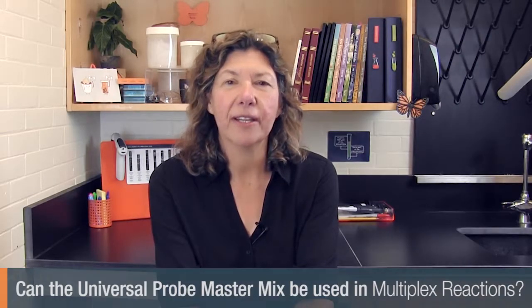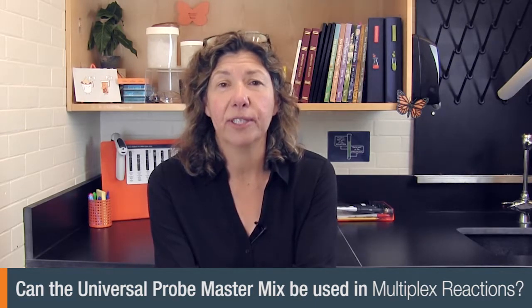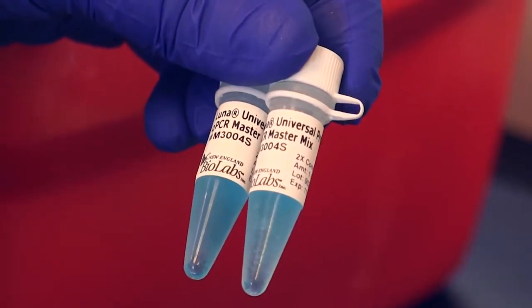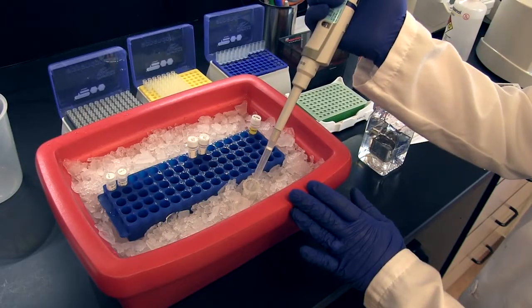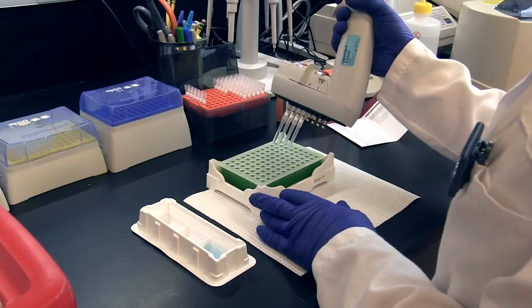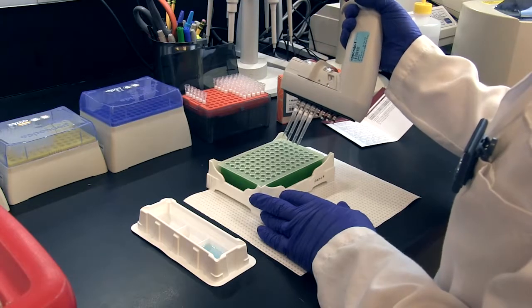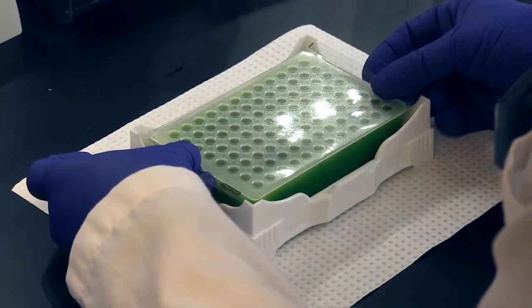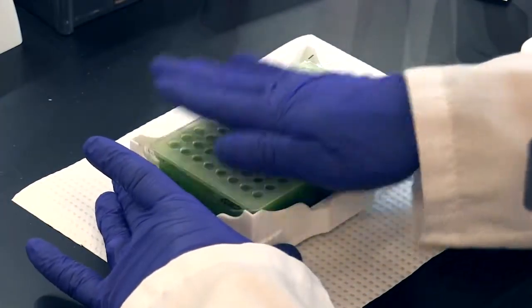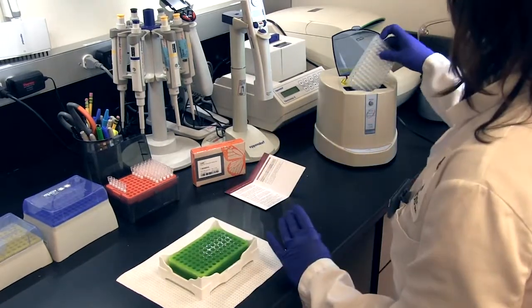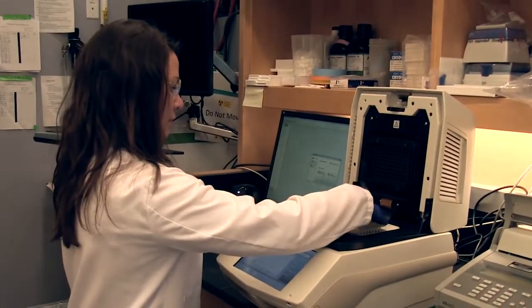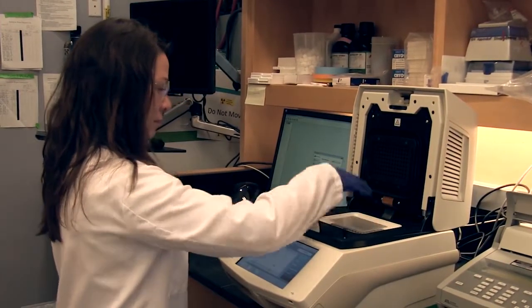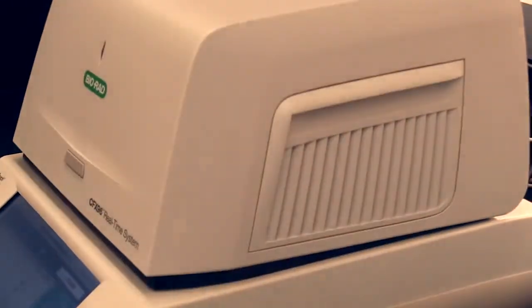Another common question we receive is whether the universal probe master mix can be used in multiplex reactions. And the answer is yes. We have tested three amplicons successfully using the mix, and you want to start by choosing different fluorophores that are detected in different channels on the qPCR instrument. Then you want to test each amplicon separately and individually in a single plex reaction. When you multiplex them, if any one amplicon looks like it's deteriorating compared to its single plex results, then you want to optimize. One of the easiest things to optimize is primer concentration. So you can start by increasing the primer concentration for targets that have low abundance and decreasing the primer concentration for targets that have high abundance.